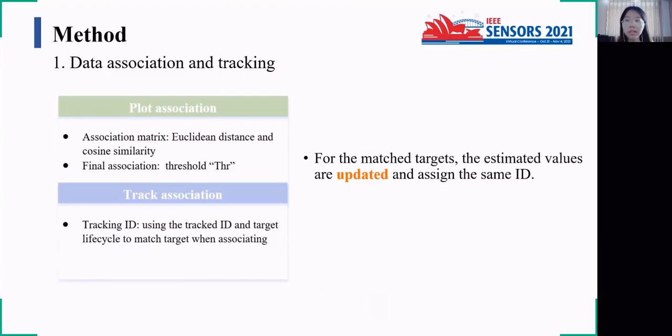And so we can come to the most important point of our work. For plot association, the data association matrix is constructed by calculating the Euclidean distance and the cosine similarity between the targets. And the final association is achieved according to the threshold, so as to determine the associated, disappearing, and emerging targets.